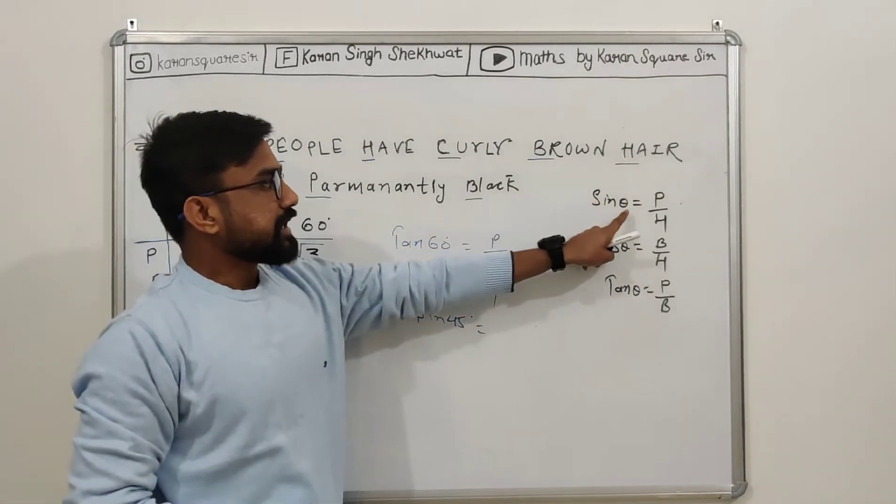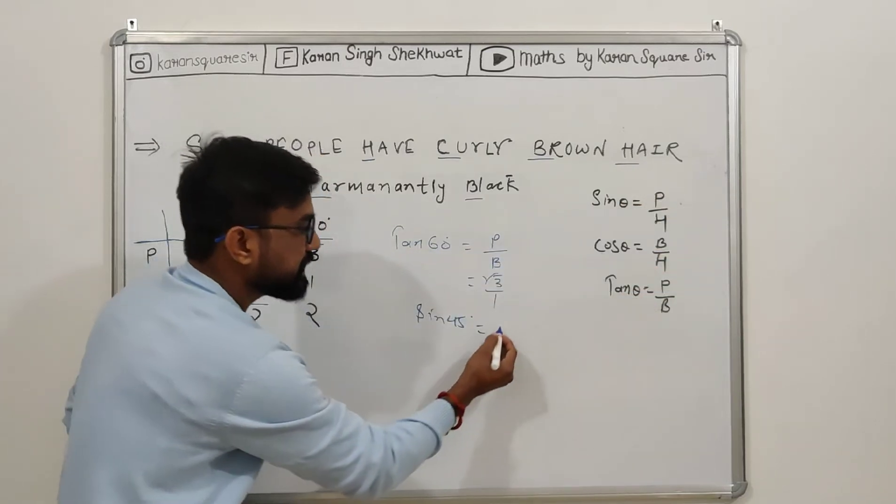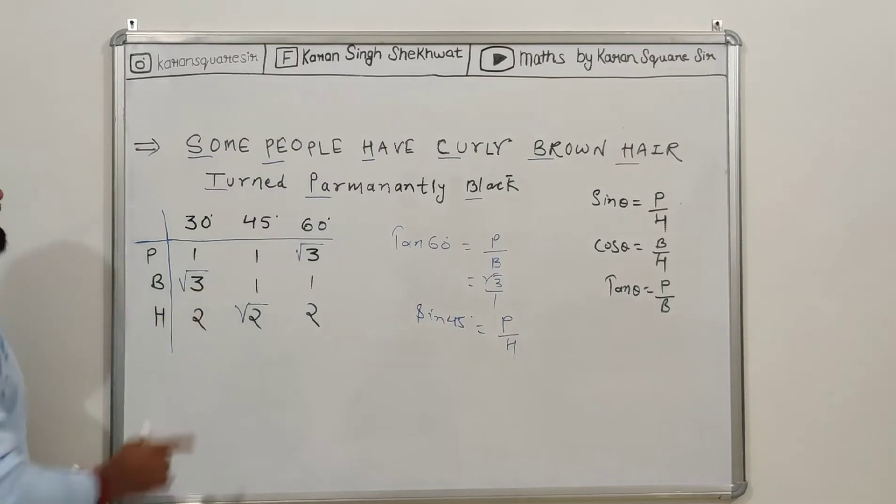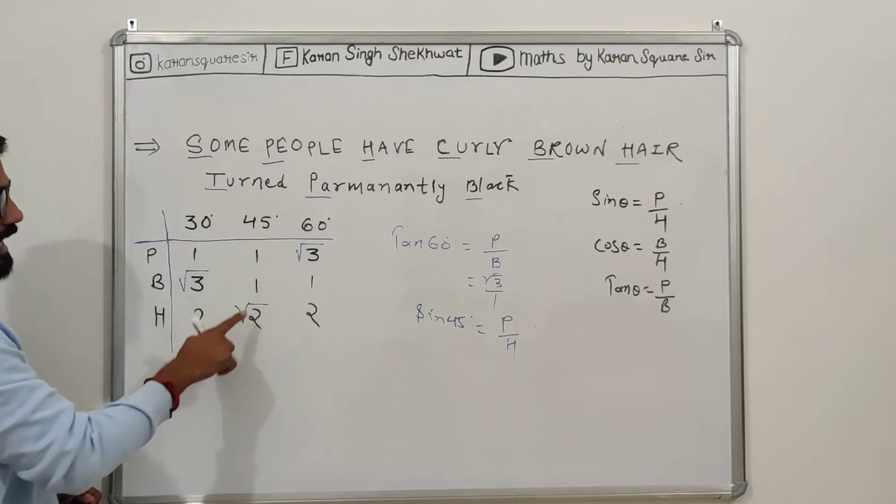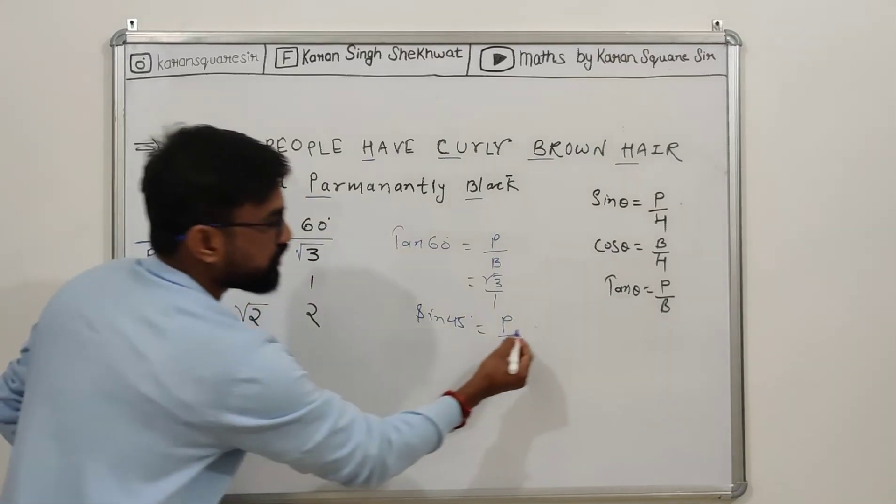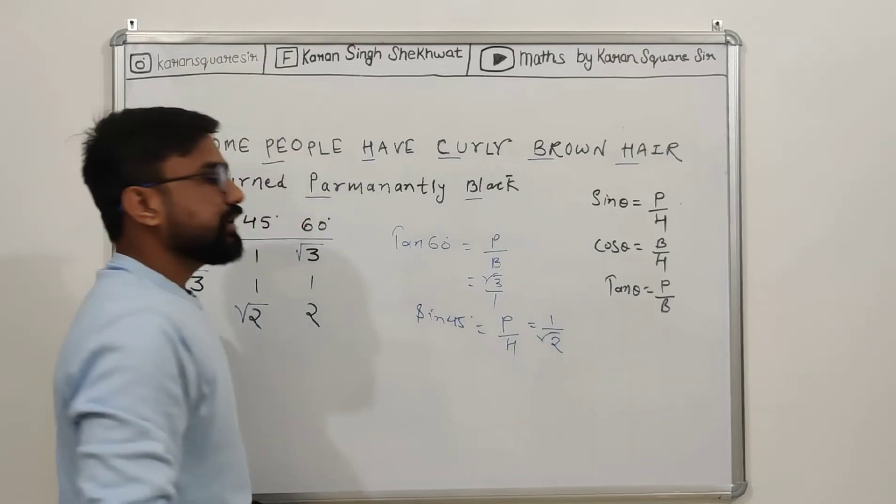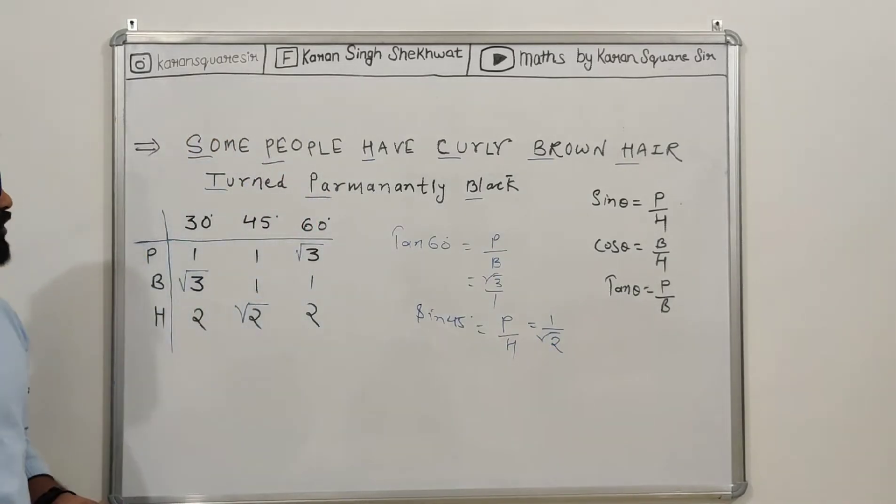Some people have - so you can add here 'people have,' and 45 is in there, so 45 is there. So perpendicular is 1 and hypotenuse is root 2. So this is your right answer. Next example we have to give you.